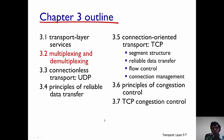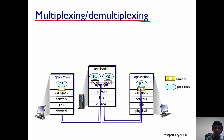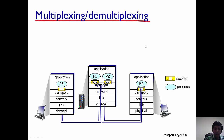In this lecture we are going to talk about multiplexing and demultiplexing in the transport layer. Consider an example where there are two clients talking to a server. The processes running at the clients and the server are P1 and P2, while each of the clients has a single application running in it.